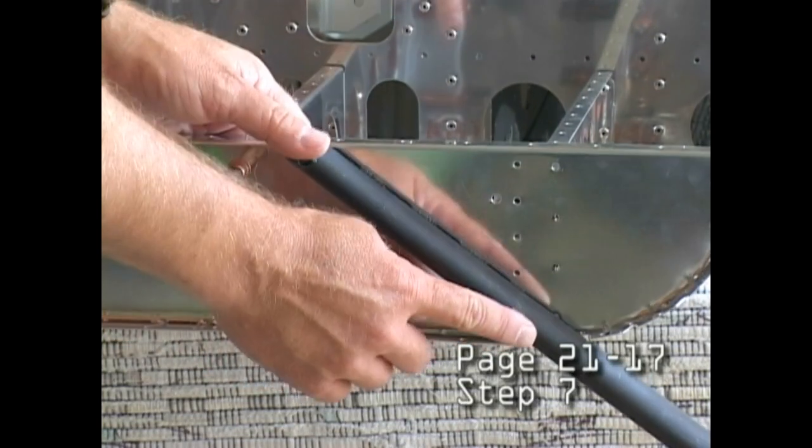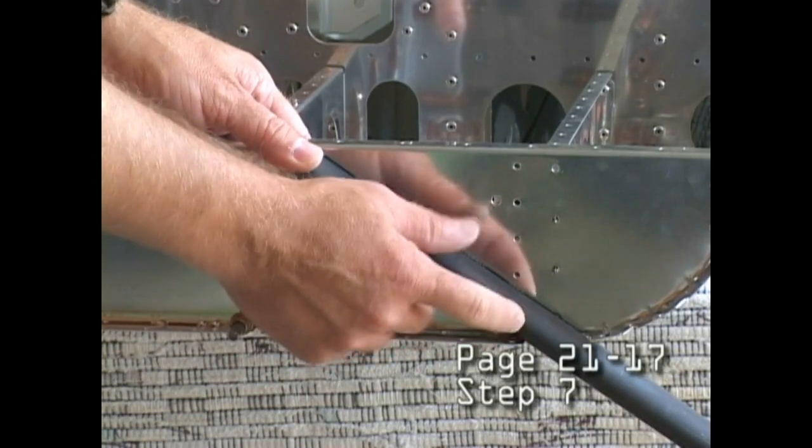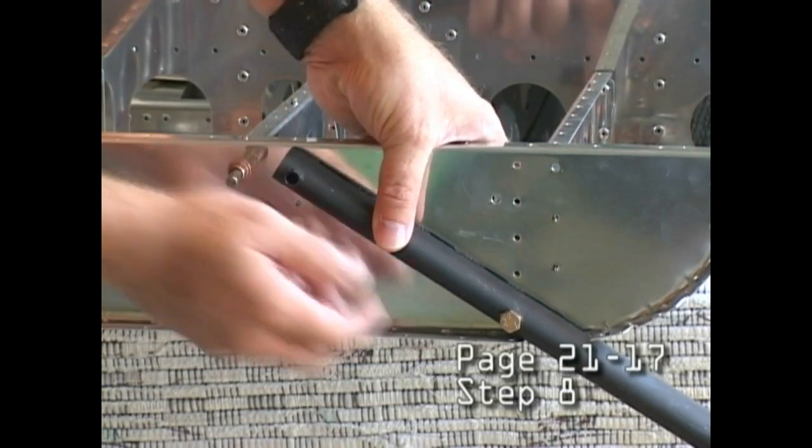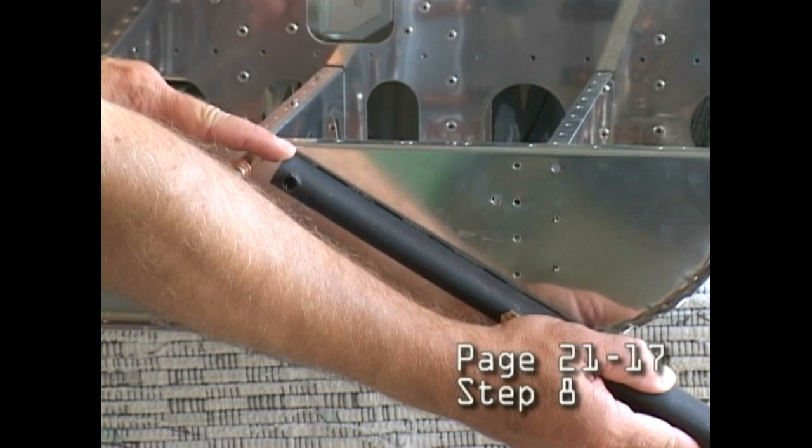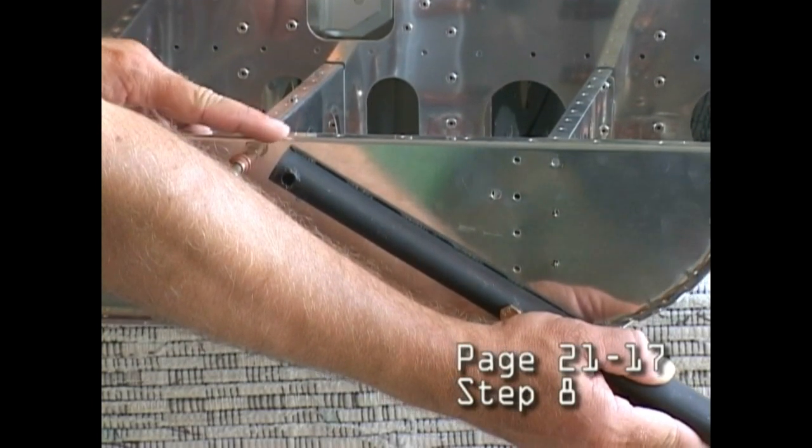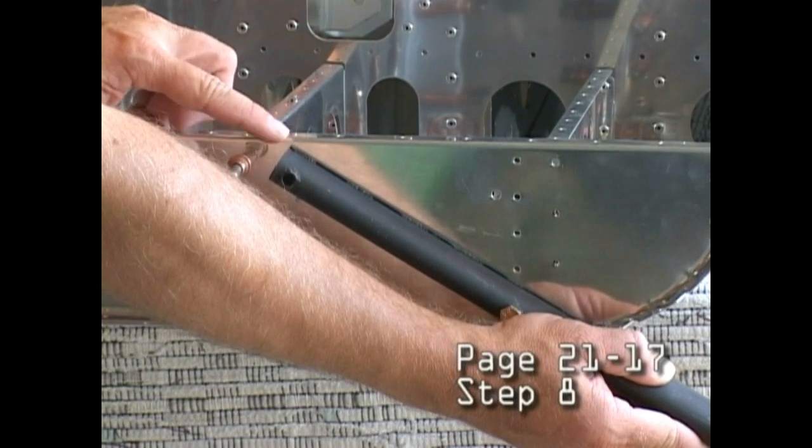In step 7, we temporarily bolt the step in place through the hole. Now in step 8, we want to position this so that this top is even or below, to be safe, than the start of the radius of the corner here.